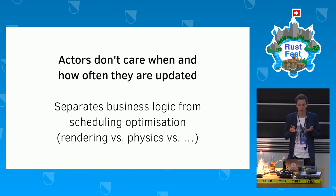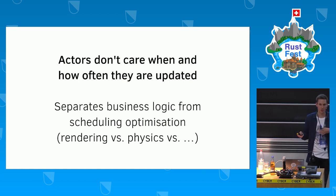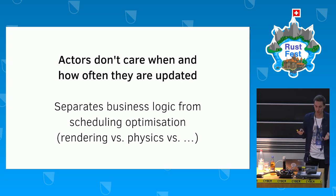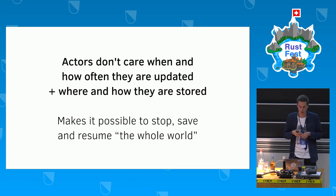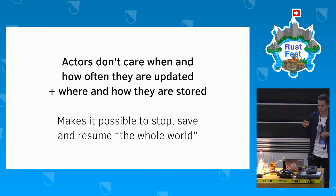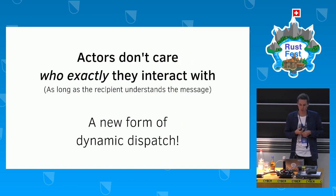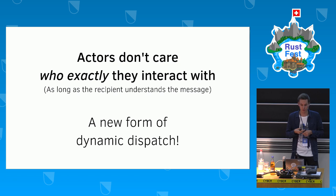Actors also don't care when or how often they're updated, making scheduling natural — rendering can run at a different pace than physics, which runs differently from other subsystems. Combining these freedoms: actors don't care when updated or how stored, so it becomes possible to stop the whole simulated world, save it to disk, and resume it later without any serialization. As a bonus, actors don't care who exactly they interact with — they just need the other actor to understand the message — enabling a whole new form of dynamic dispatch.